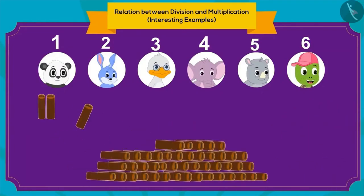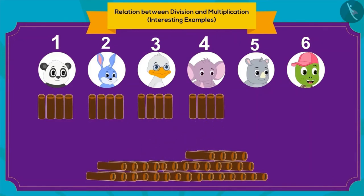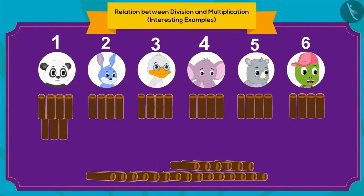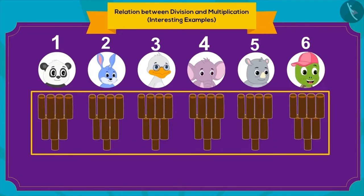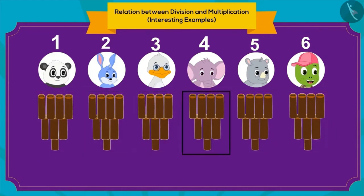To begin with, we can give four wooden sticks to each one of his friends like this. We can then further give them three sticks each. And finally, we can give one stick more to each friend. This way, we can make bundles of eight sticks to divide 48 sticks equally among six friends.